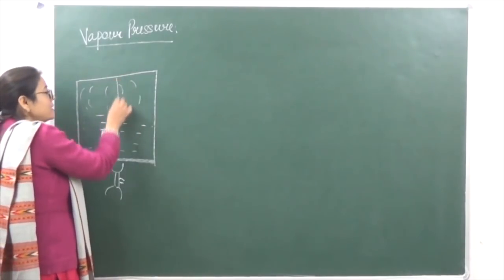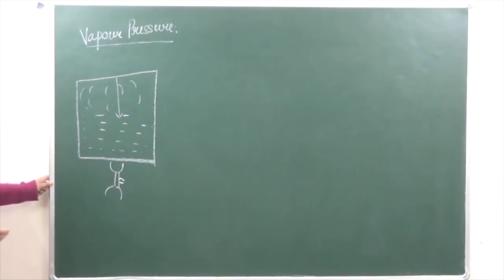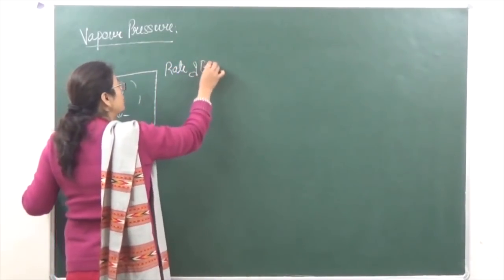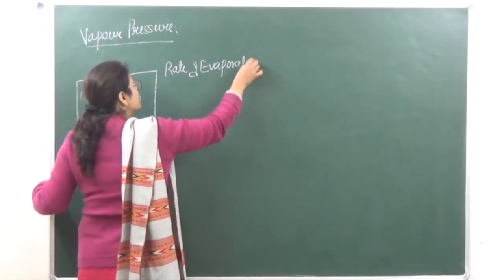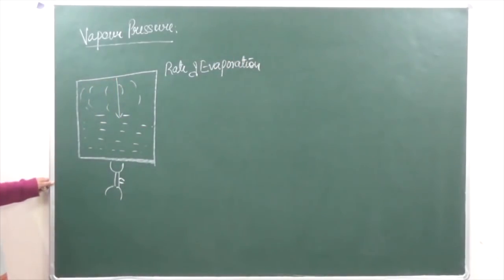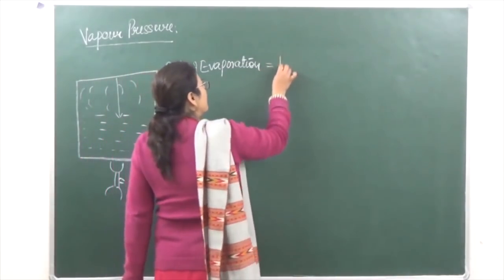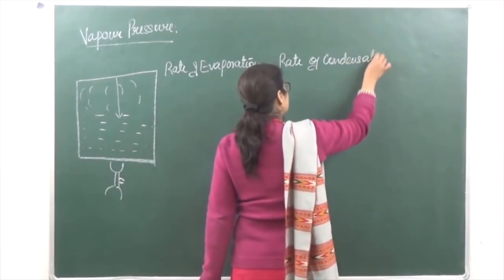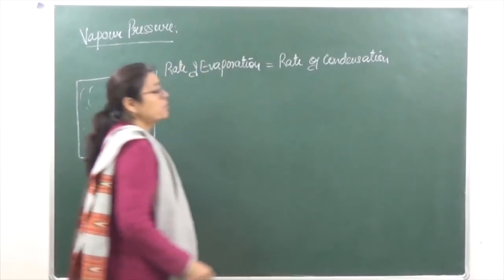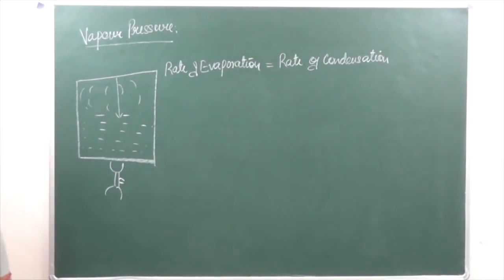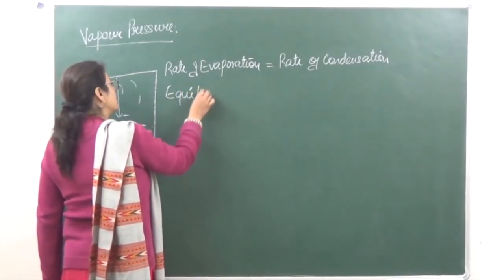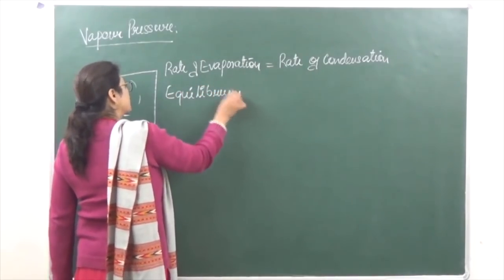The vapor is going to hit the wall of the container, condense and come back in the form of liquid. So we say that in this container there are two processes taking place. One is evaporation, and the amount of evaporation taking place per unit time is known as the rate of evaporation. The second process taking place is condensation. A time comes when rate of evaporation becomes equal to rate of condensation, and this point is known as equilibrium.